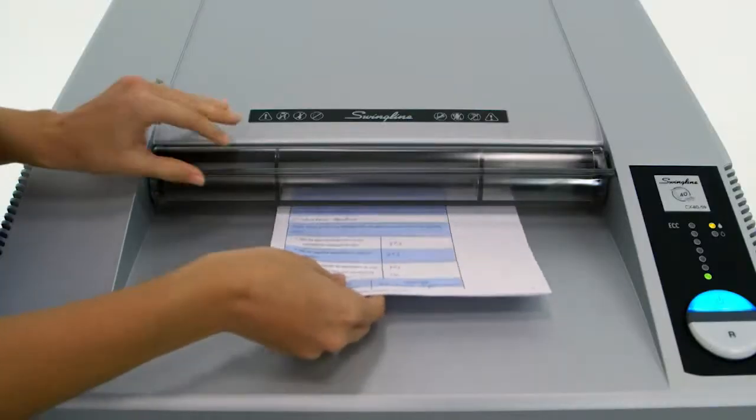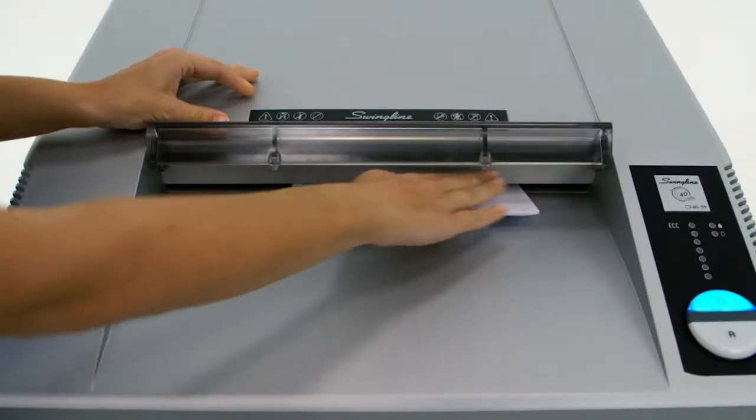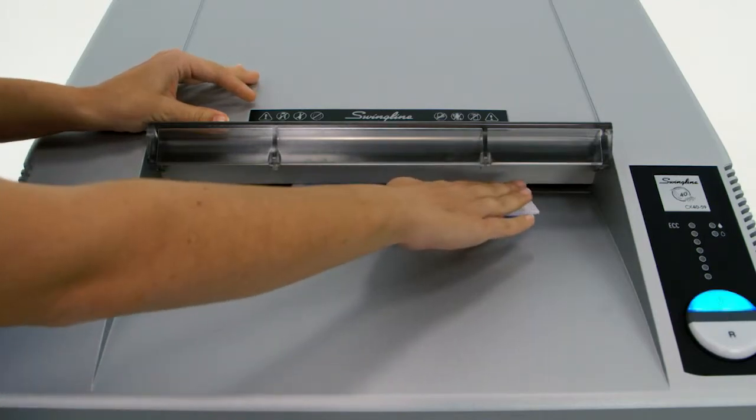If a jam does occur, the Fingersafe electronic safety guard automatically turns off the shredder when you remove the jam.